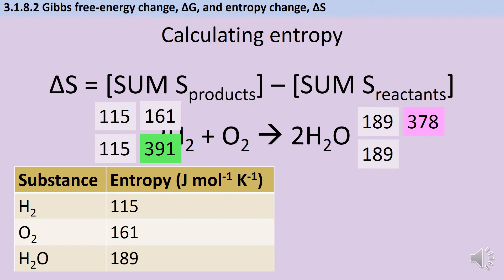If I do the sum of the products take away the sum of the reactants, I have 378 take 391 which gives me an overall entropy change of minus 13. If I do a little common sense check, this does make sense. Overall the amount of entropy is decreasing because I'm going from three molecules to two.